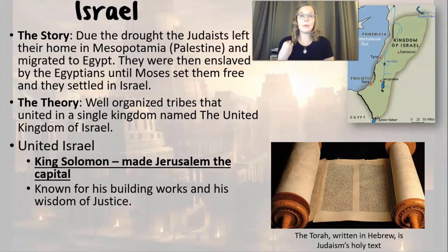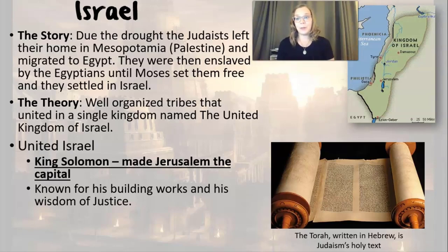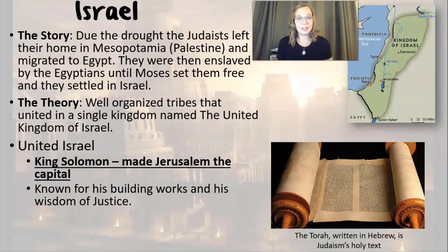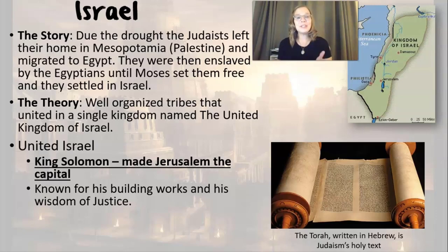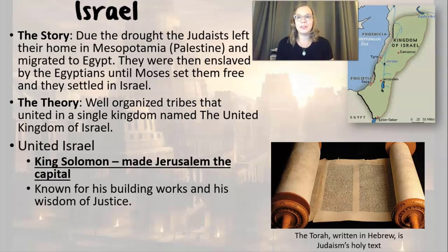Solomon was also known for all the great buildings he created and his wisdom, especially when it came to justice. There's a famous story about Solomon where two women came to him claiming a baby was theirs and arguing over whose child it was. King Solomon didn't know whose son it was, so he said, 'If you can't agree, we'll just cut the child in half and you each get one piece.' The real mother was so upset and distraught that he could tell who she was, because the other woman wasn't as upset — he tricked them to figure out who the right mother was.